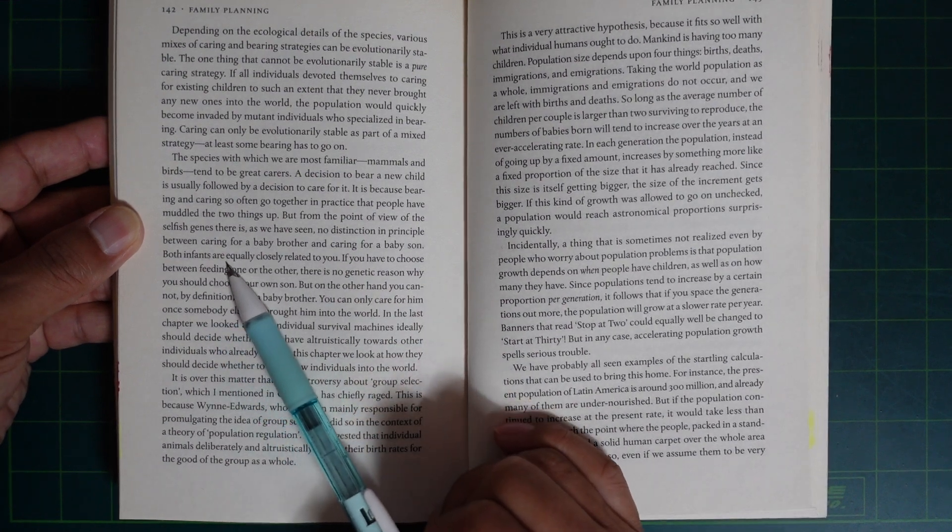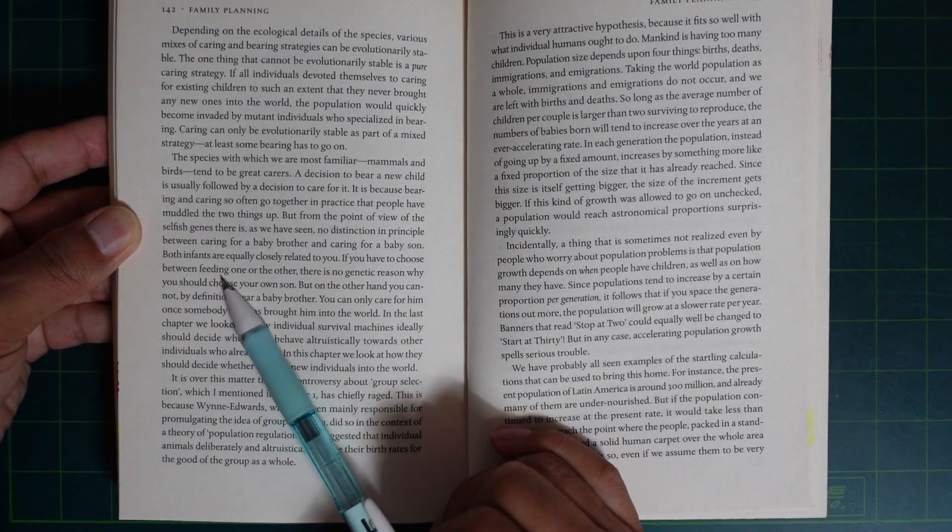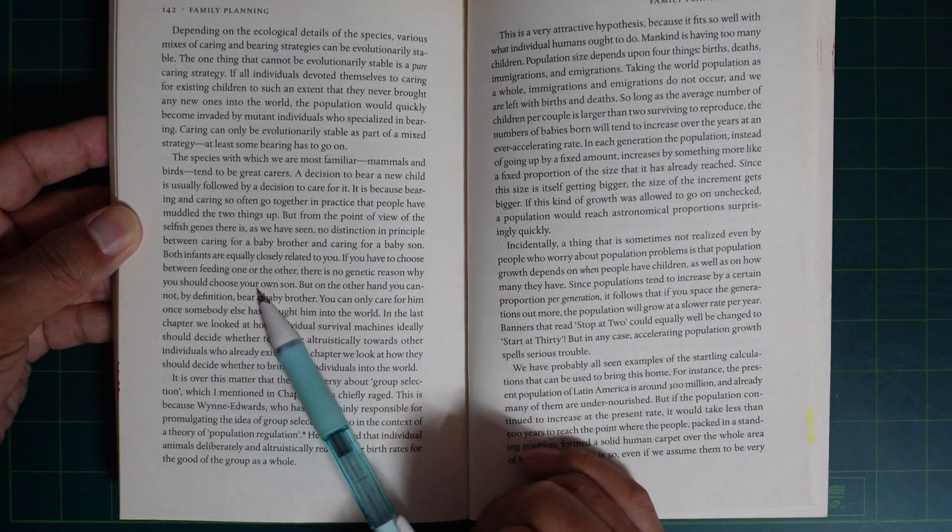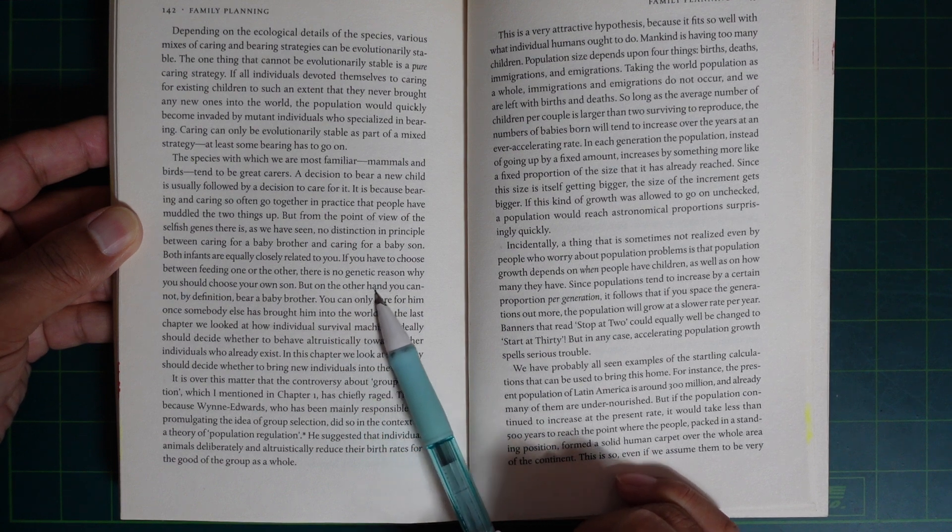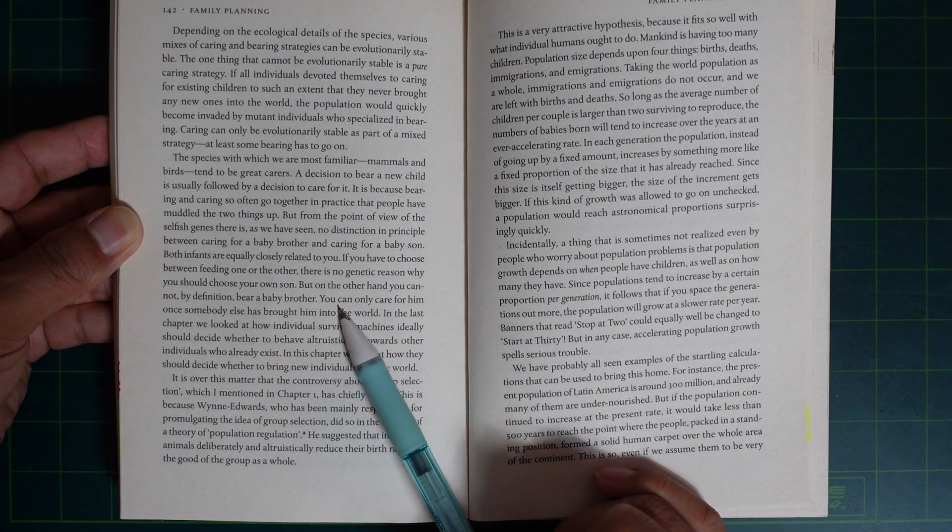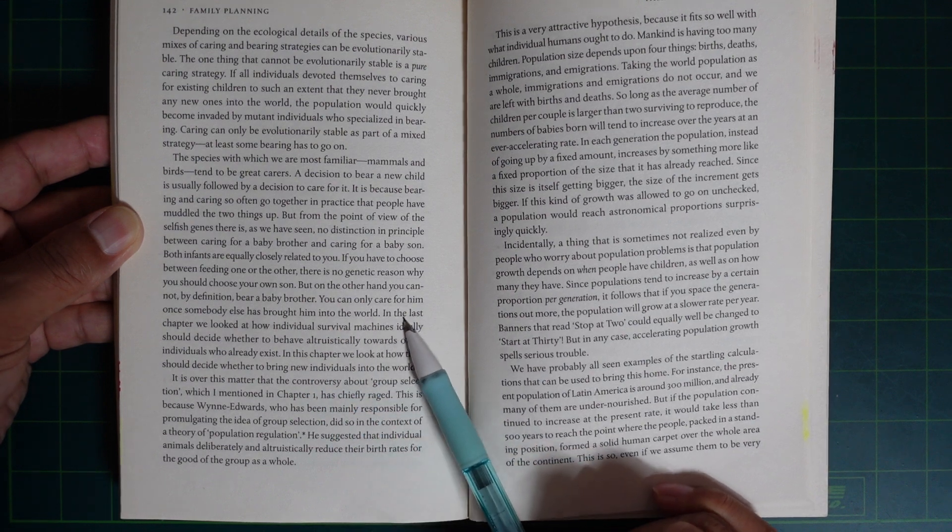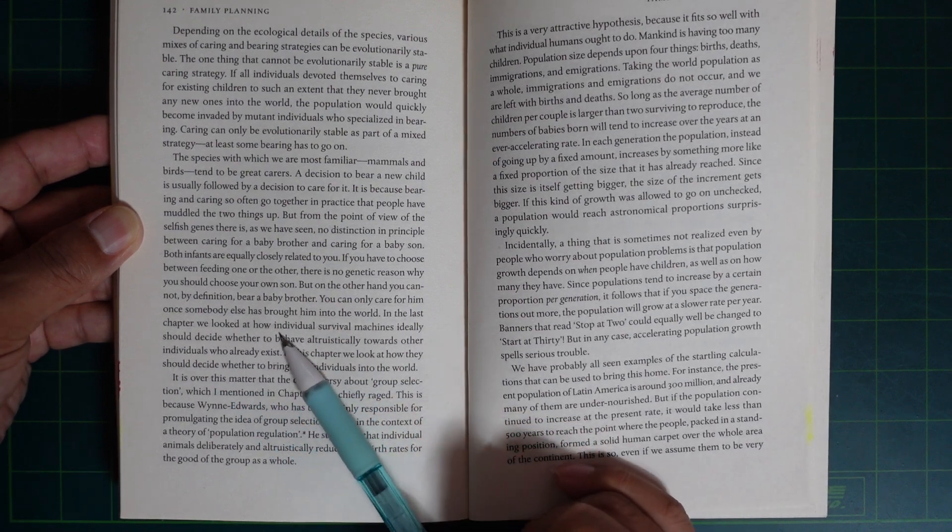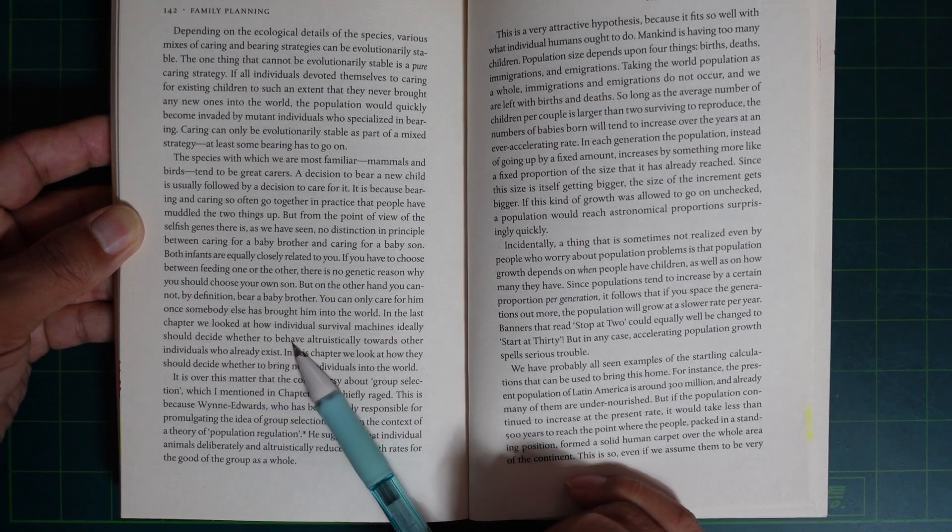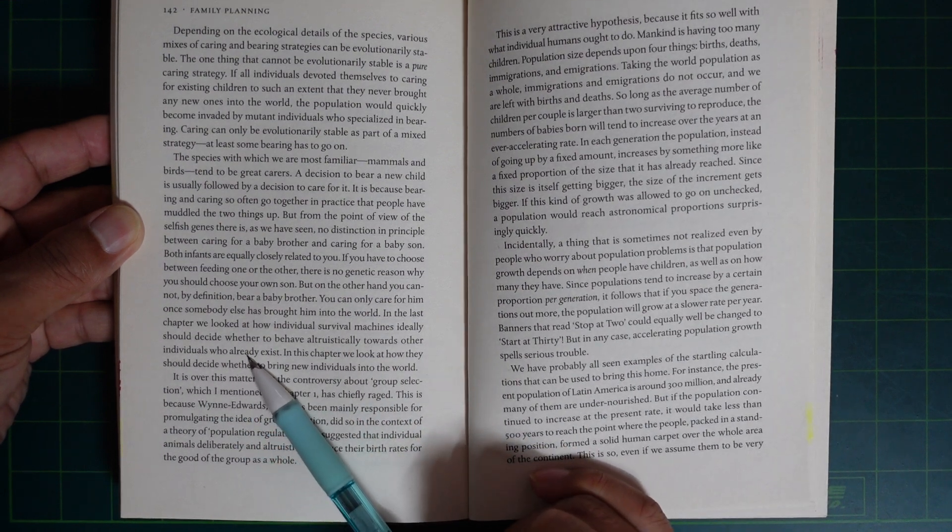Because bearing and caring are so often together in practice, people have muddled the two things. But from the point of view of the selfish gene, there is no distinction in principle between caring for a baby brother and caring for a baby son. Both are equally closely related to you. If you have to choose between feeding one or the other, there is no genetic reason why you should choose your own son. But on the other hand, you cannot by definition bear a baby brother. You can only care for him once somebody else has brought him into the world.